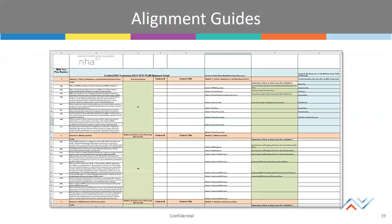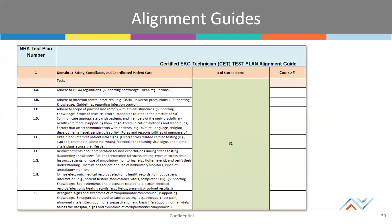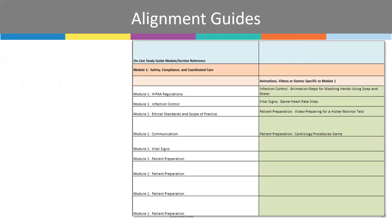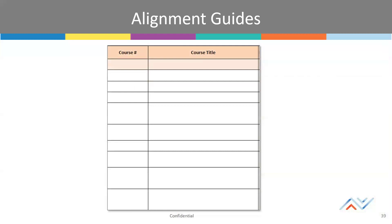Alignment guides are unique to the certification type and include an outline of the full test plan identifying how many scored questions there will be on the exam in each domain. This also maps out where in the NHA study guide that content is covered and if there are additional resources within the learning content, including videos and games. This is a wonderful tool to align to your students' learning, as well as review your program content to ensure there aren't any large gaps. There are also open columns so you can plug in where in your book, week, or program you are covering the core content.